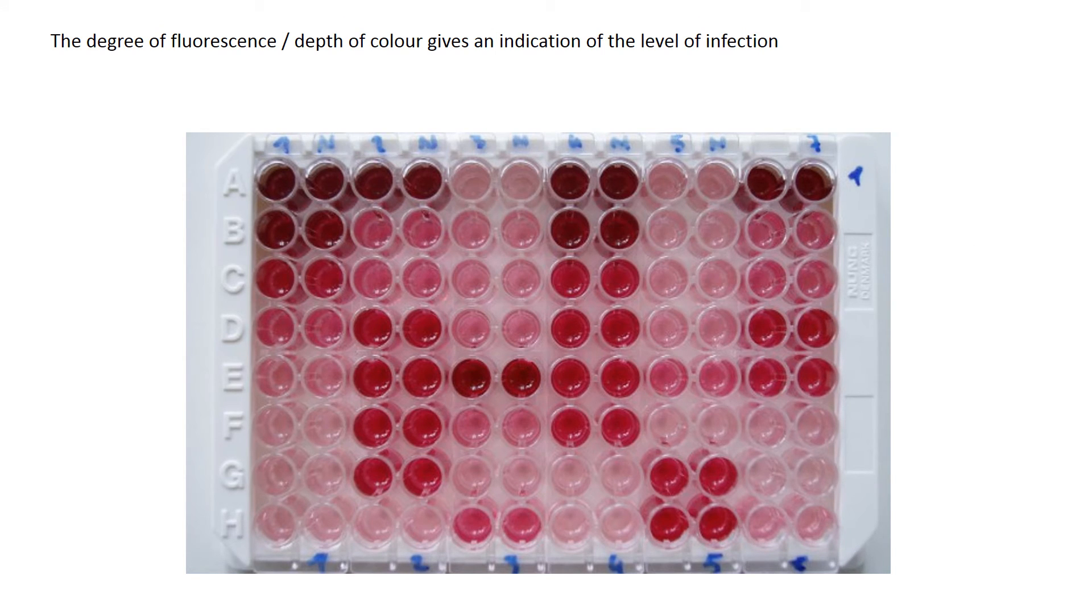As a side note, you should also be aware that the level of fluorescence, how bright it is, or the depth of color if it's a particular dye, will actually give a scientist an indication of the level of infection somebody has. You can see here this is an ELISA plate using a red colored dye.